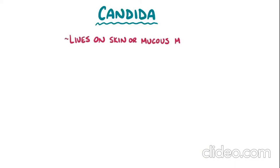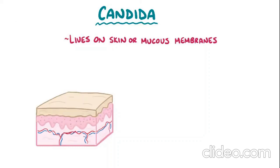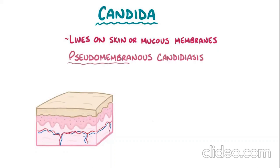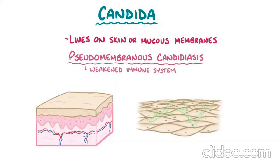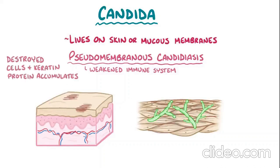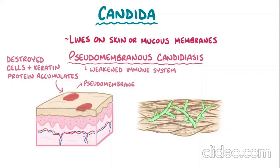Candida typically lives on the skin or mucous membranes, and when it starts to overgrow it can damage nearby tissue. The most common pattern of injury is pseudomembranous candidiasis, primarily due to a weakened immune system. This causes destruction of the stratified squamous epithelium layer, leading to accumulation of destroyed cells and keratin protein, forming a white lesion called a pseudomembrane that looks like cottage cheese. The white lesions are not typically painful and can be scraped away. It is common in young infants and the elderly, who have relatively weak immune systems.